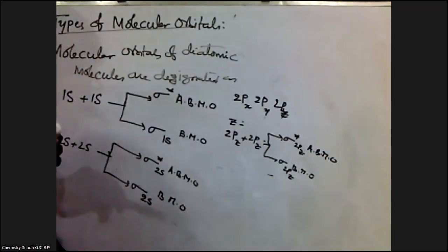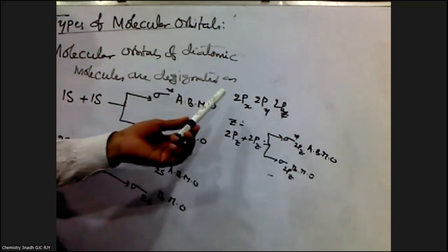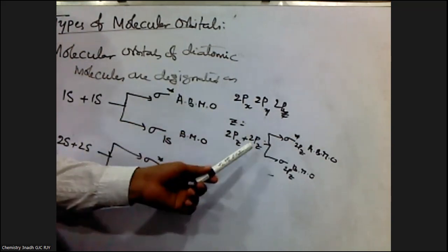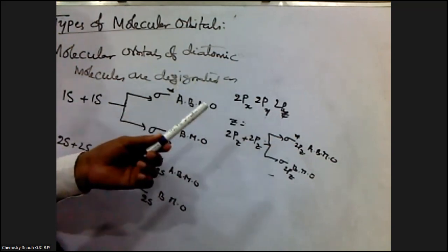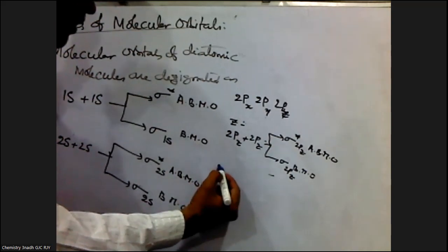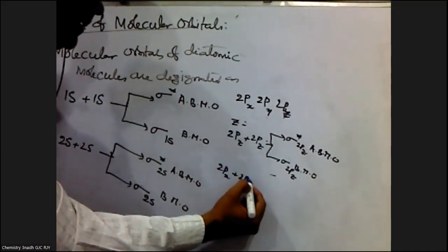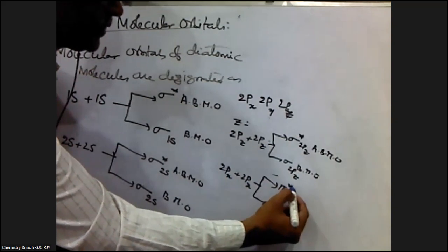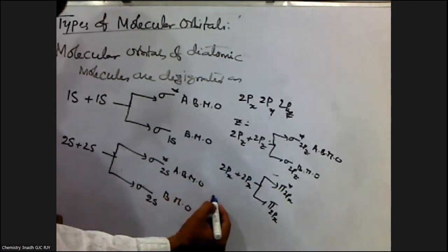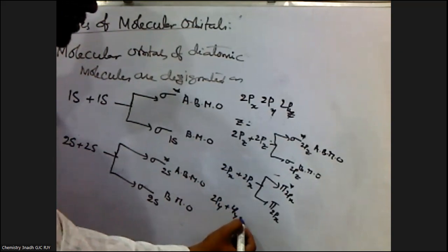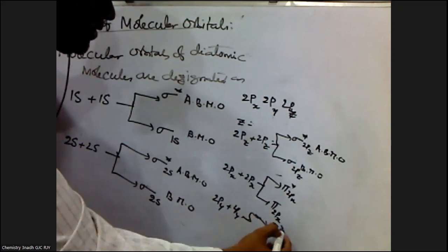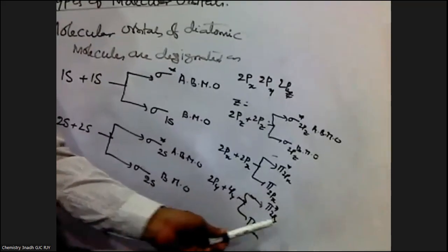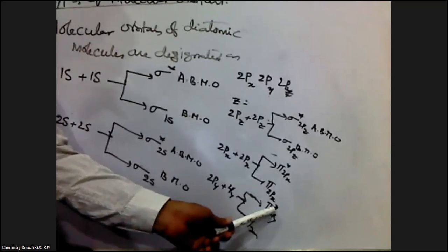The remaining two p orbitals — 2px and 2py — since p orbitals are perpendicular to each other, they cannot overlap axially. Therefore, they combine laterally and form pi orbitals: pi 2px and pi star 2px, and similarly pi 2py and pi star 2py — bonding and anti-bonding molecular orbitals respectively.